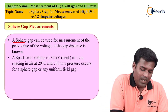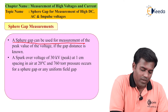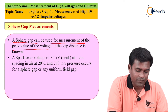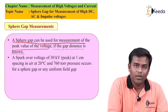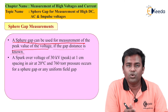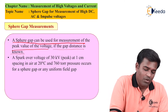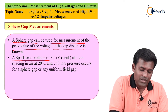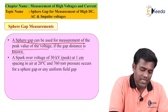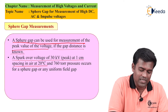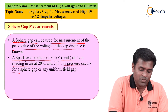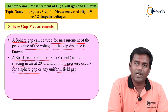A Sphere Gap can be used for measurement of the peak value of the voltage. If the gap distance between the two spheres is known, then we can measure the peak value of the voltage. A spark-over voltage of 30 kilo-volt peak at 1 cm spacing in air at 20 degree Celsius and 760 Torr pressure occurs for a Sphere Gap or any uniform field gap.